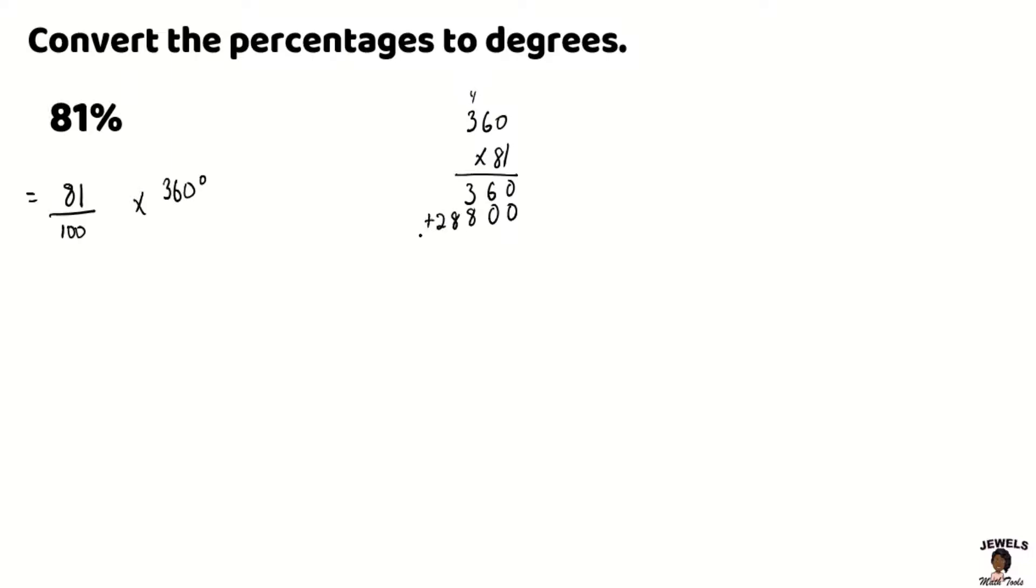Now let's sum our numbers together. 0 plus 0 is 0, 0 plus 6 will equal to 6, 8 plus 3 is 11, put our 1, carry the 1, 8 plus 1 will give us 9, and we're going to bring our 2 down. So now that we've multiplied 81 times 360 degrees, this will equal to 29,160 degrees being divided by 100.